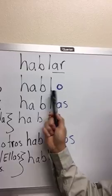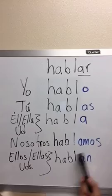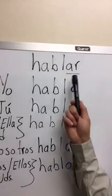If you memorize the endings: yo — o; tú — as; él, ella, usted — a; nosotros — amos; ellos, ellas, ustedes — an. You can conjugate any other regular verb that ends in AR.